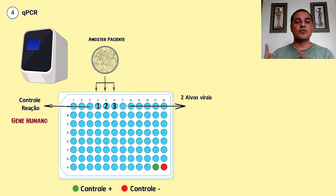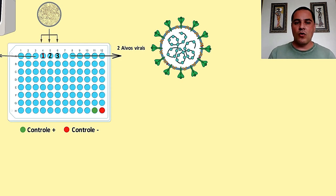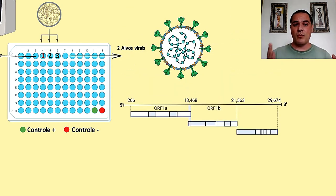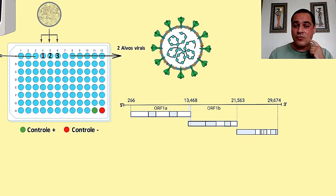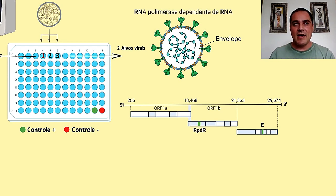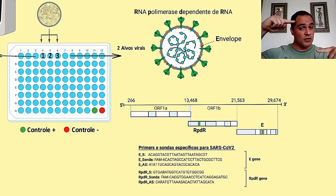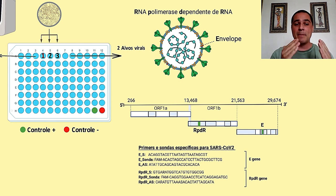A gente vai ter então outros dois genes, anotados como 2 e 3, que são genes específicos para a detecção do novo coronavírus. Como vocês viram nos vídeos anteriores, a gente tem o genoma de RNA do vírus, e para esses testes foram escolhidos dois genes: um gene que codifica por uma proteína de envelope e um outro gene que codifica por uma RNA polimerase dependente de RNA. Para ambos, a gente vai ter um primer que vai se ligar numa fita, outro primer na outra fita, e a sonda — três iniciadores para cada reação, cada um acontecendo num poço diferente.